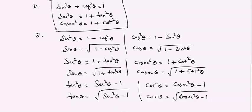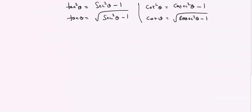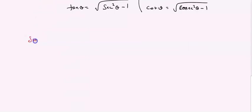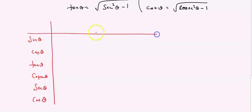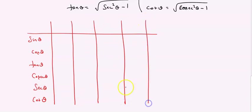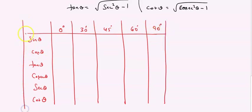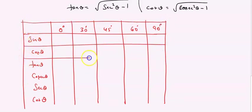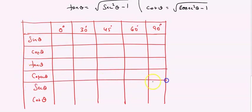You should also know the trigonometric standard angles. The standard angles are for sin theta, cos theta, tan theta, cosecant theta, secant theta, and cot theta at 0°, 30°, 45°, 60°, and 90°. Let me make a table: sin 0° = 0, sin 30° = 1/2, sin 45° = 1/√2, sin 60° = √3/2, sin 90° = 1. These are our trigonometric standard angles.